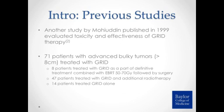Muhuddin published another study in 1999 evaluating both effectiveness and toxicity. He had 71 patients with advanced bulky tumors greater than 8 cm treated over about three to four years. Eight patients received GRID followed by definitive therapy with 50 to 70 gray and then surgery. Forty-seven patients received GRID with additional radiotherapy in more palliative cases. Fourteen patients were treated with GRID alone. For palliative patients, there was a 78% pain response rate. For mass effect, meaning tumor arrested or actually shrinking, there was a 72.5% response rate. For bleeding cases, they had a 100% response rate in that category.